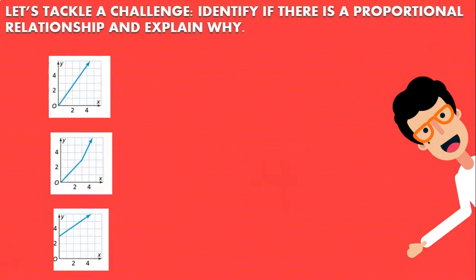Let's tackle a challenge. Now guys we're going to try to identify if these graphs show a proportional relationship or not. So the first graph, it is a straight line and it also passes through the origin, meaning that this is a graph that shows a proportional relationship.